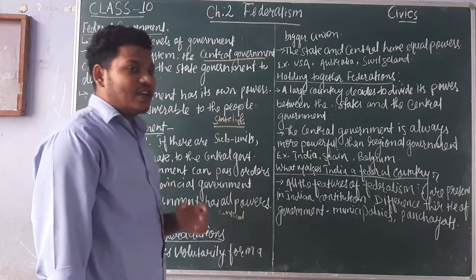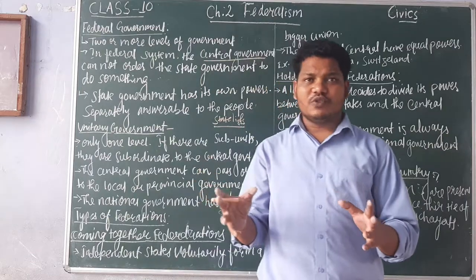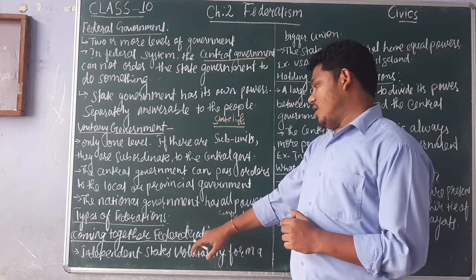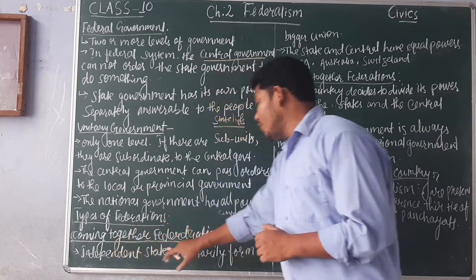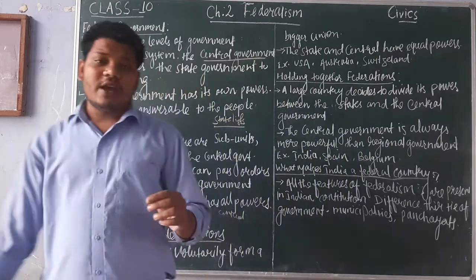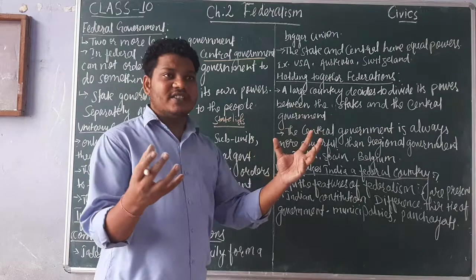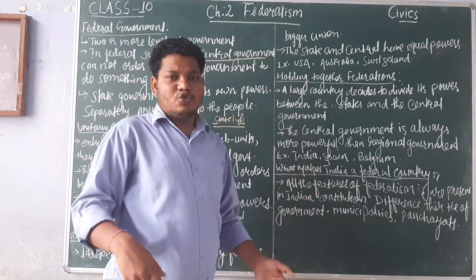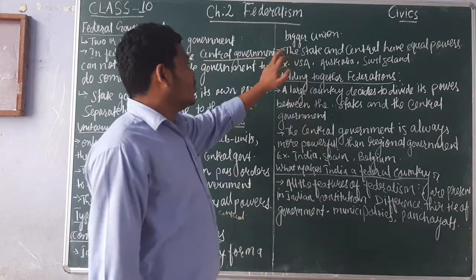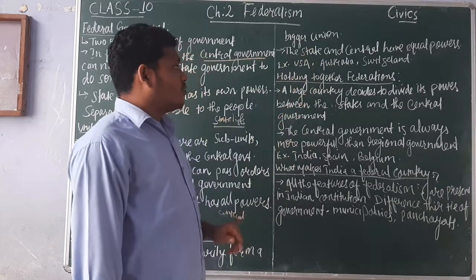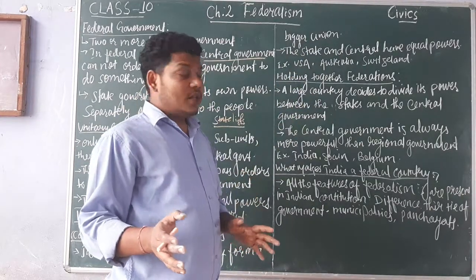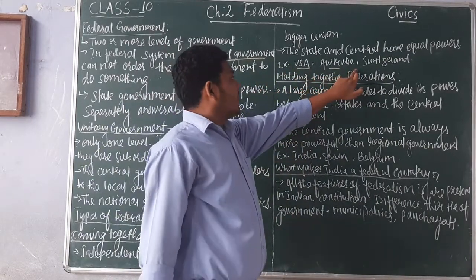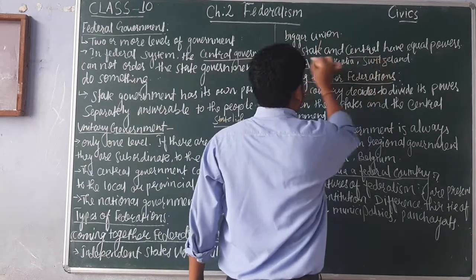There are different types of federation in this world. We will focus on two important types. The first is the coming together federation. In this type, smaller regions voluntarily come together to form a bigger country. They are not forced to join but voluntarily join into bigger units forming a bigger union. The state and central governments have equal power. Examples are USA, Australia, and Switzerland.